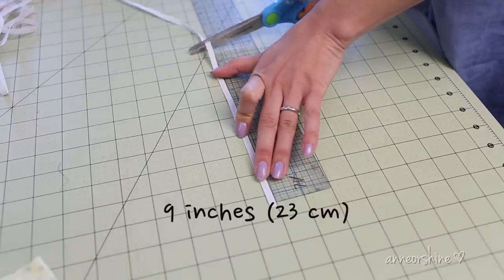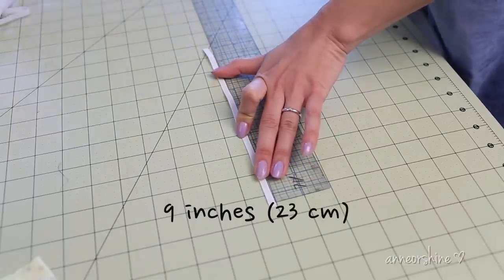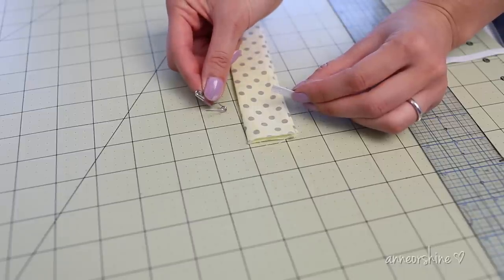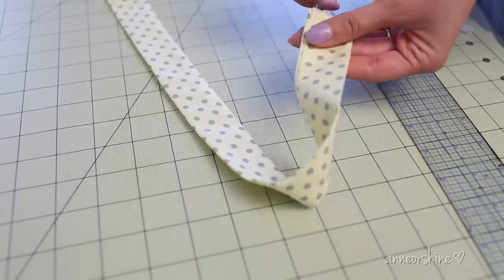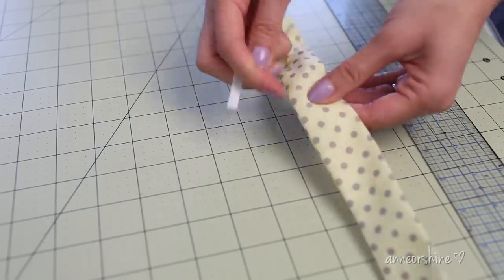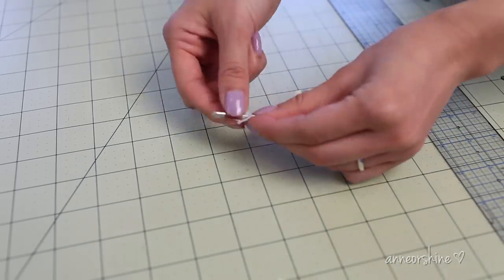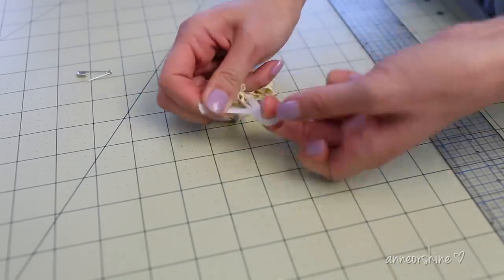Okay, so once both pieces are pressed and nice and flat, cut out a 9 inch piece of elastic. Then insert that through the tube you sewed earlier. Tie both ends together just like how I'm doing it right here.